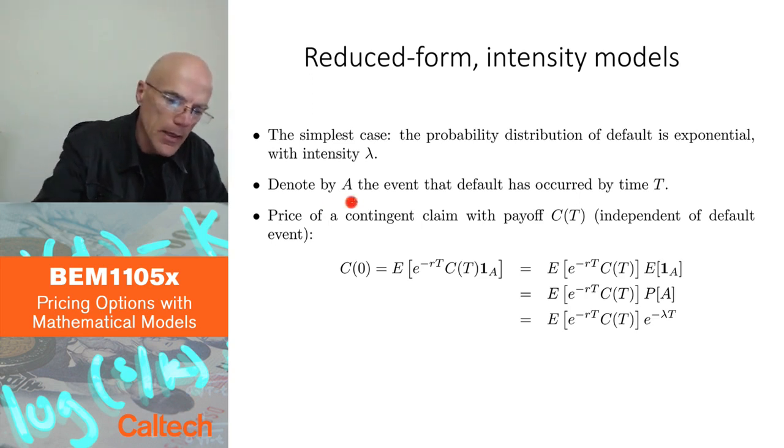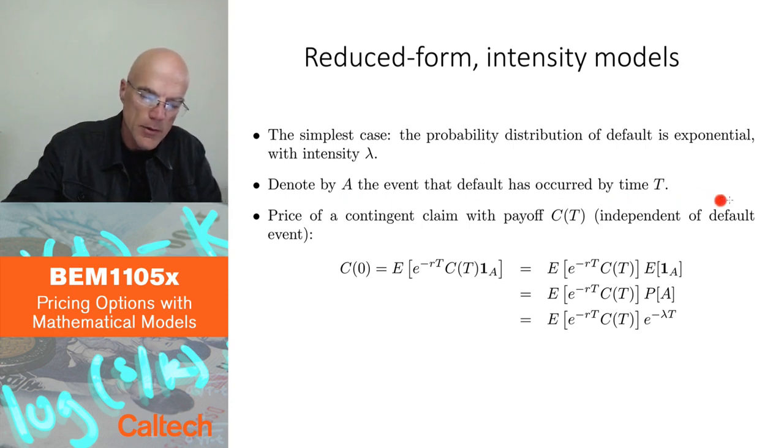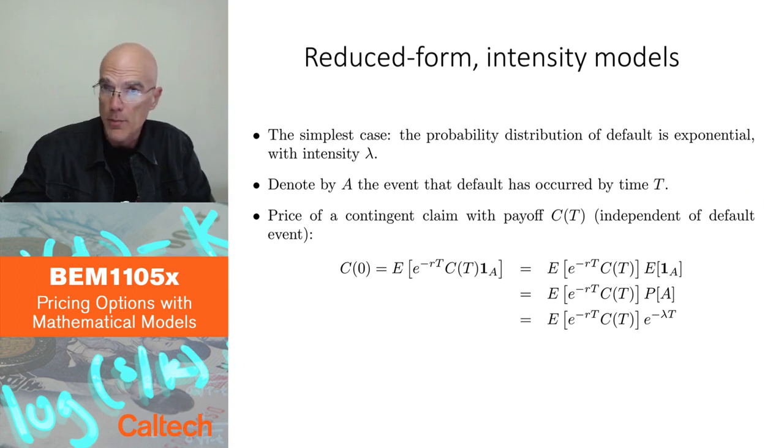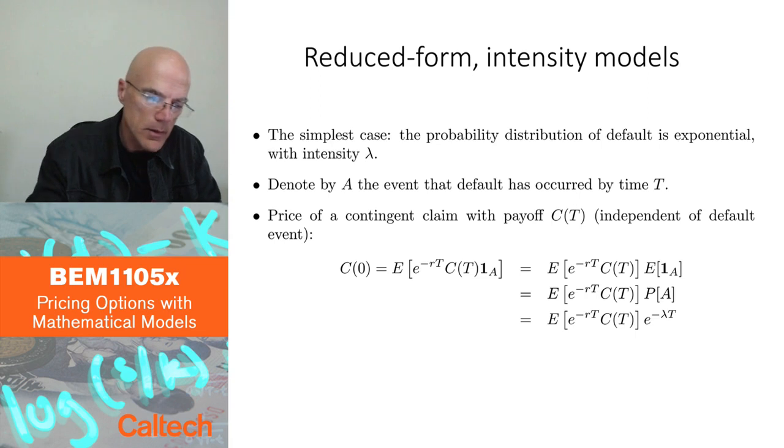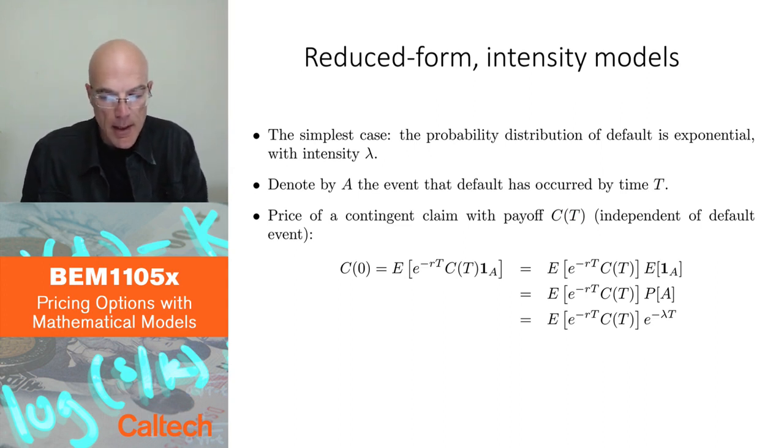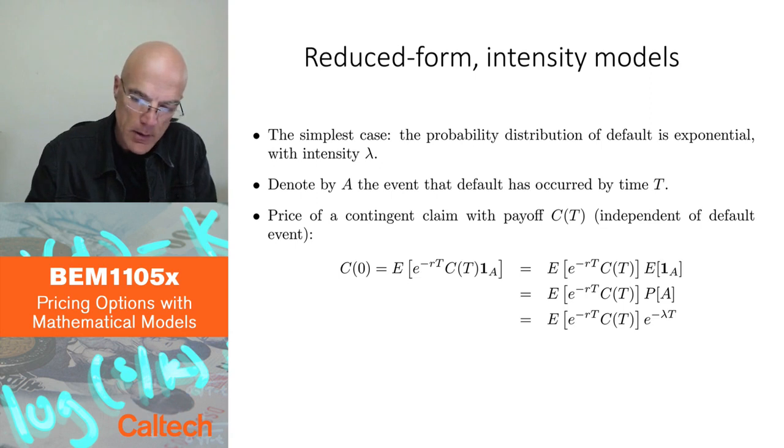Some notation: I'm going to denote by A the event that default has occurred by maturity. Suppose I want to price maybe corporate bonds, but maybe some other derivative which may be influenced by the default of this company. So the payoff is C(T). And in this slide I'm going to assume for simplicity that this payoff is independent of the default event A. I'm going to assume an extreme case in which either I get C(T) if there is no default, or I get zero.